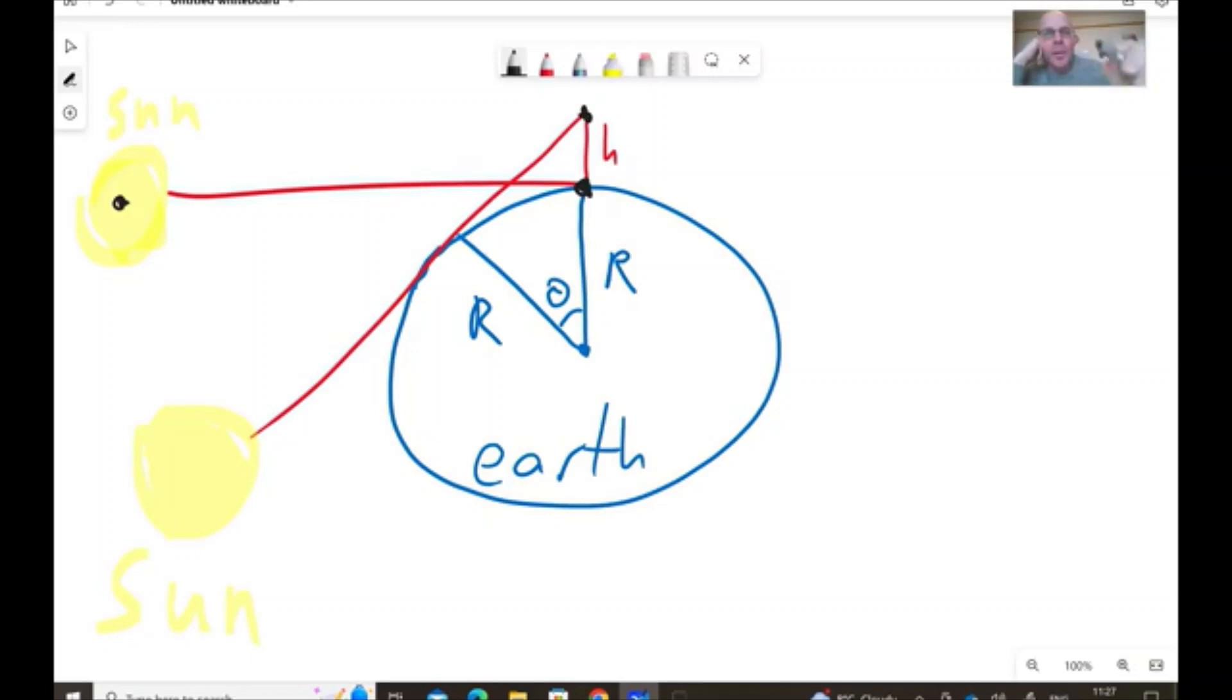Then, as we go up to a certain height h, in the meantime, Earth is rotating. Well, let's assume that, I mean, for simplicity, that the sun is rotating. It's true that the Earth is orbiting or spinning around its axis, but from our point of view, we can think about the sun as if the sun is rotating in the meantime.